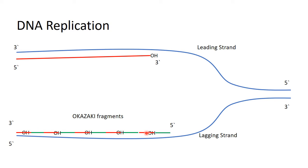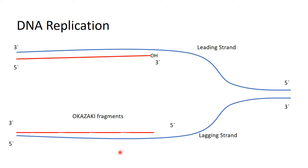This takes place by DNA polymerase. Then the RNA primers will be removed. Here we have a hydroxyl group at the 3' end of each fragment, so the DNA fragments will be completed and then we have the full DNA strand.